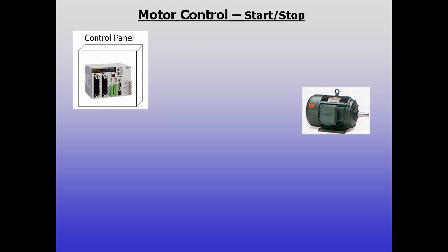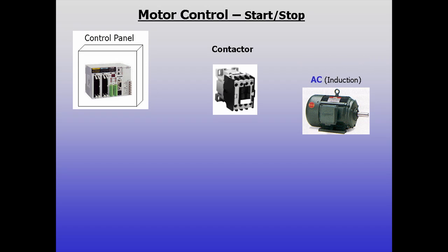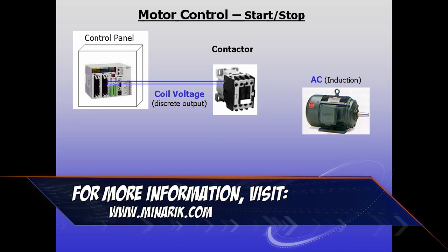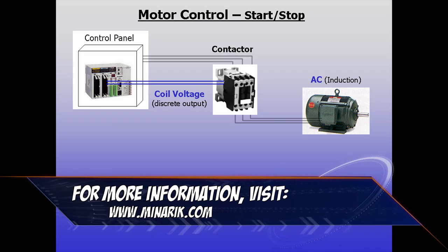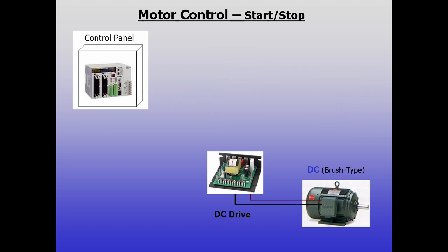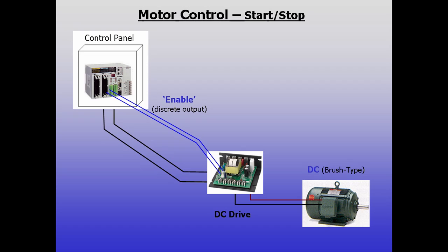The simplest control is on or off. This is common for motors that will only run at fixed speeds. For AC induction motors, discrete outputs can energize the coil of a contactor, which then passes full power to the motor. DC motors will require a DC drive to furnish their power, but it can also be triggered with discrete outputs.